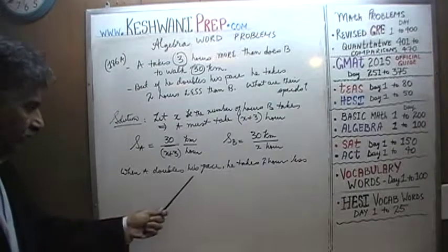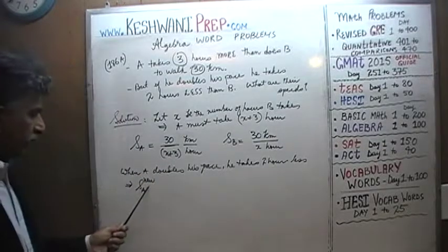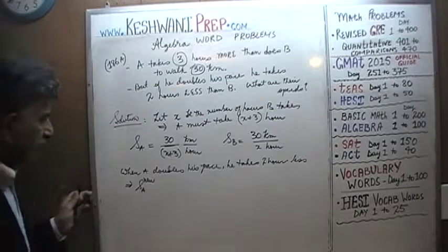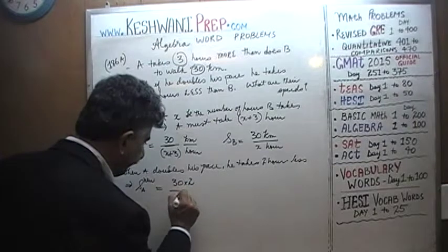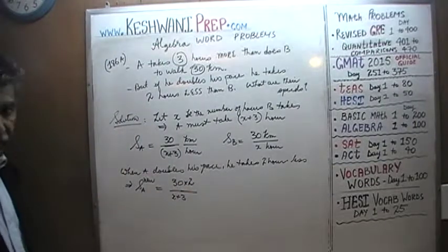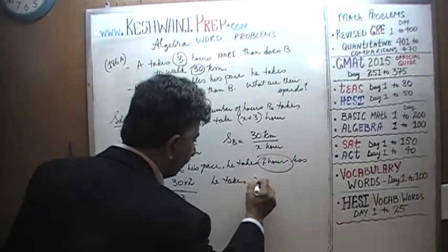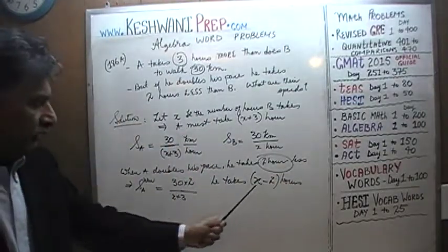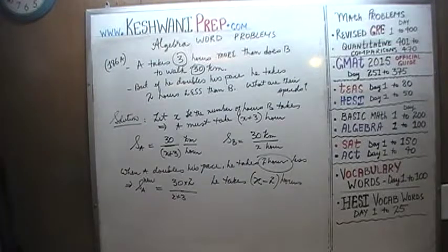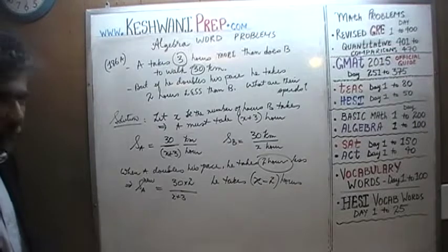If A doubles his pace, the new speed of A is simply the old speed — 30 over X plus 3 — times two. He is still traveling 30 kilometers, but how long does he take? He takes two hours less than B, so if B takes X hours, A takes X minus two hours. We have the speed, the time, and the distance — we can set up our equation: 30 equals the new speed times the time, which gives us 30 equals 30 times 2 over X plus 3, times X minus 2.